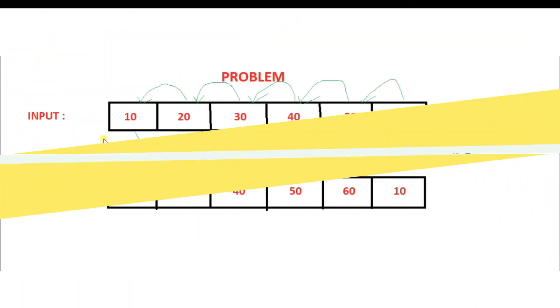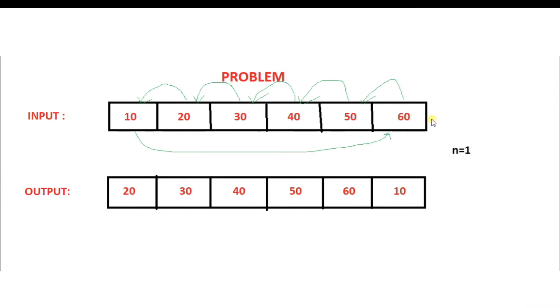Hello guys and welcome back to my channel. In this video we will see how to rotate an array to the left by N positions. Before finding the solution, let's first try to understand the problem in depth. This is our input array. If the user enters the value 1, we have to rotate this array to the left by one position, so 20 should come here, 30 at the next position, 40 at the next, and so on. After performing the operation, our output array should look like this.